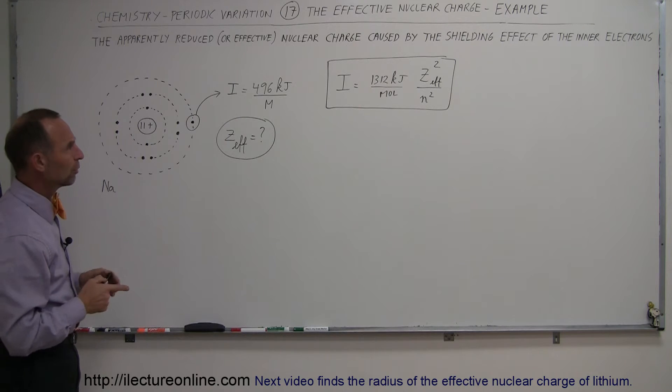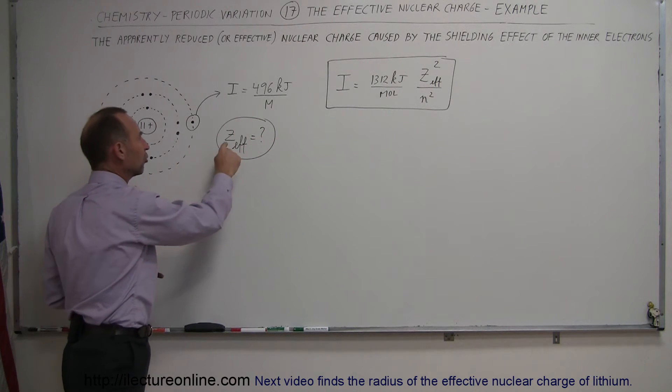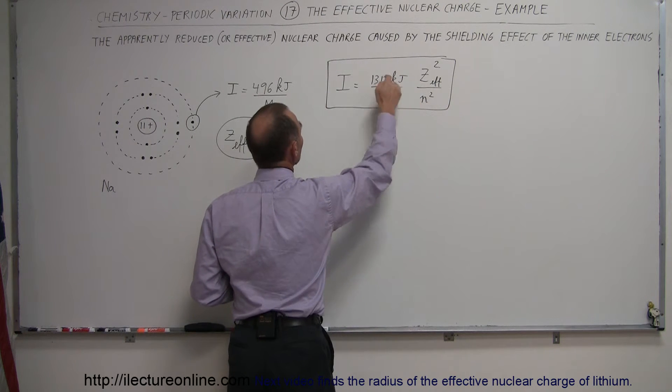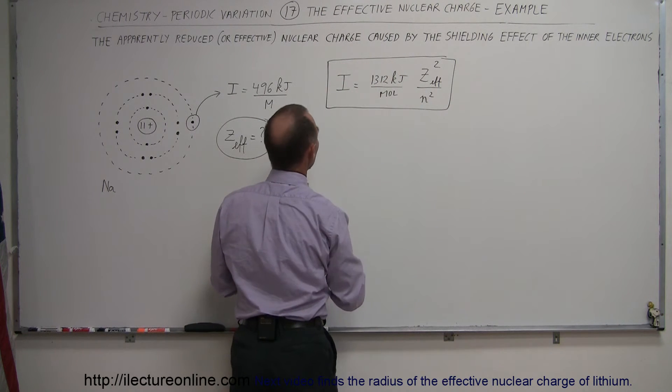Now, what we're going to do is take that equation, turn it around, and solve it for Z-effective. So we're going to take the 1,312, put it down here, take the N-squared, put it down here, turn the equation around.